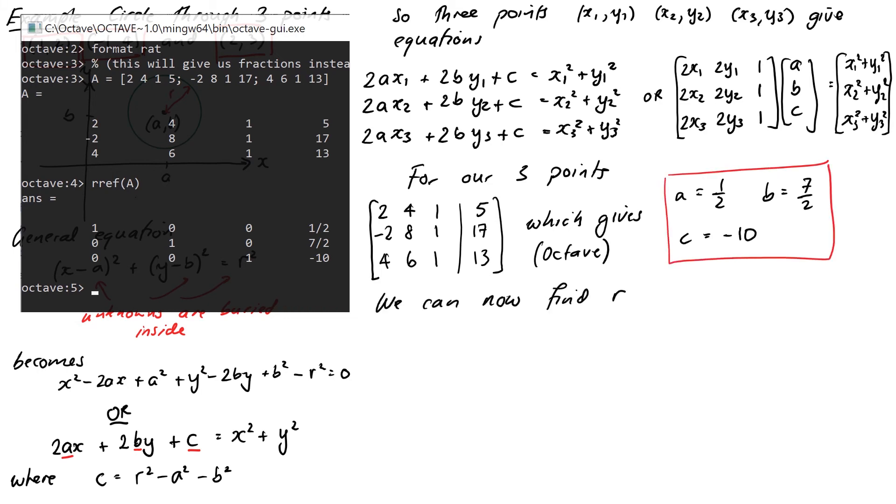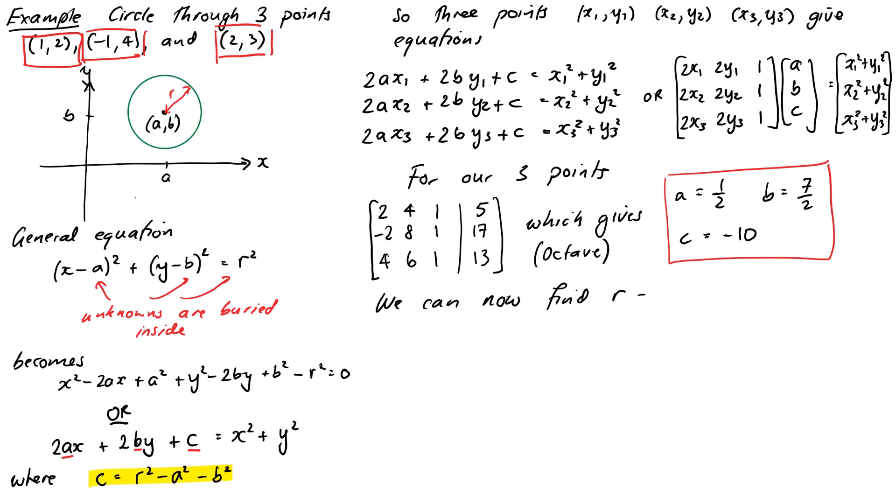This means we can now find R, because R, from the equation we had before, is just the square root of A squared plus B squared plus C, which will become the square root of a quarter plus 49 over 4 minus 10, which is the square root of, well, 49 plus 1 over 4 is 25 over 2. 25 over 2 minus 10 is 25 over 2 minus 20 over 2, which is the square root of 5 over 2. So our circle has center 1 half and 7 halves, if you like, or 0.5 and 3.5, and radius of root 5 over 2, which is approximately 1.581.